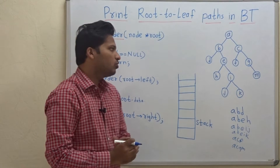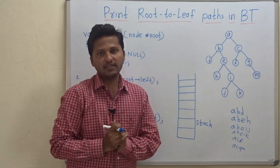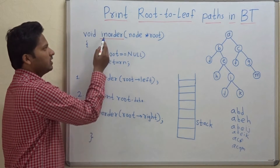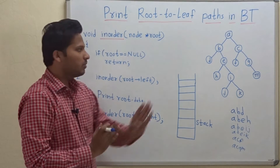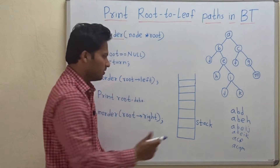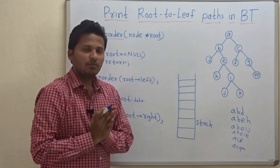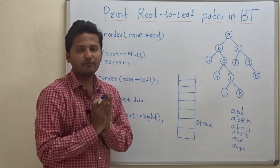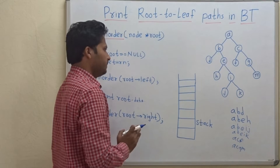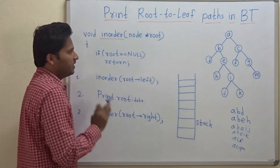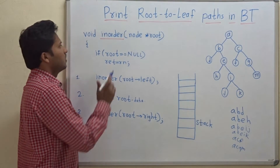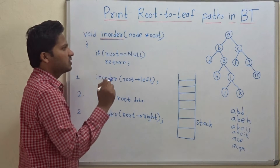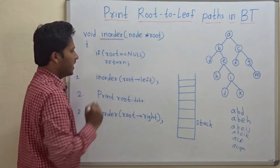Now let's see how to print these root to leaf paths with a program. For our program we are going to use in-order traversal of the binary tree plus a stack. By using these two we are going to print all the root to leaf paths. For printing root to leaf paths, first of all we should know in-order traversal of the binary tree and the code for that.